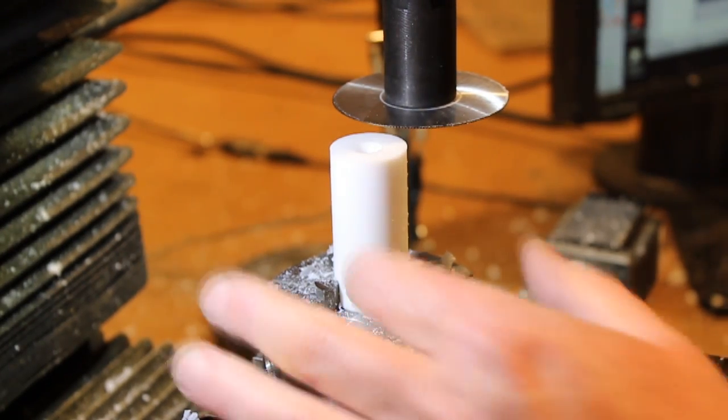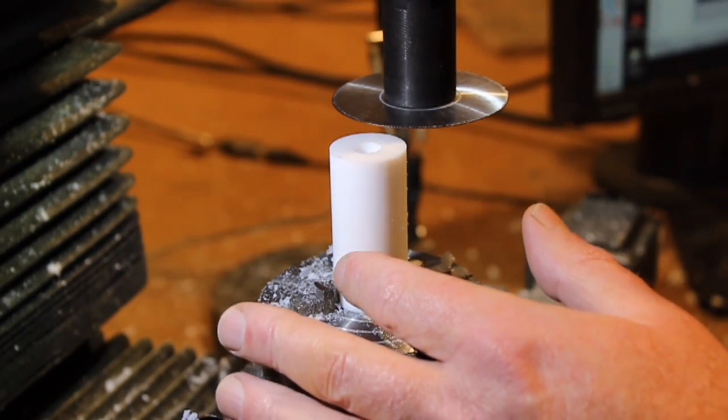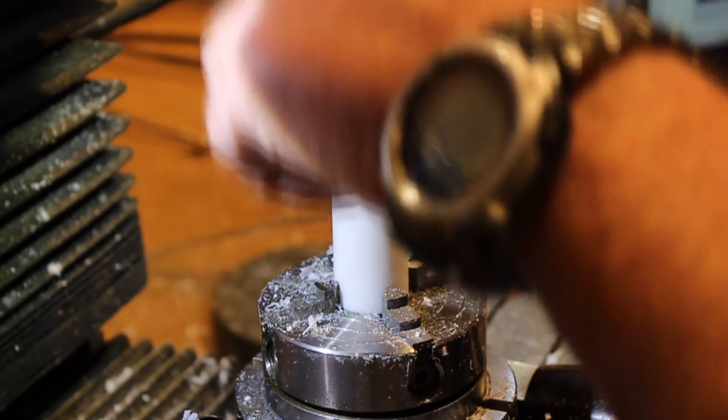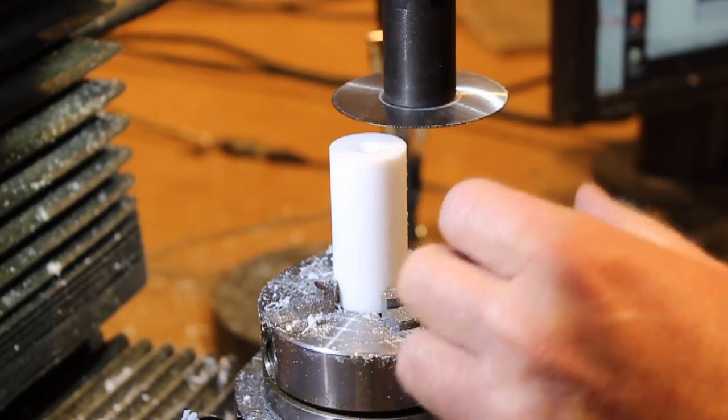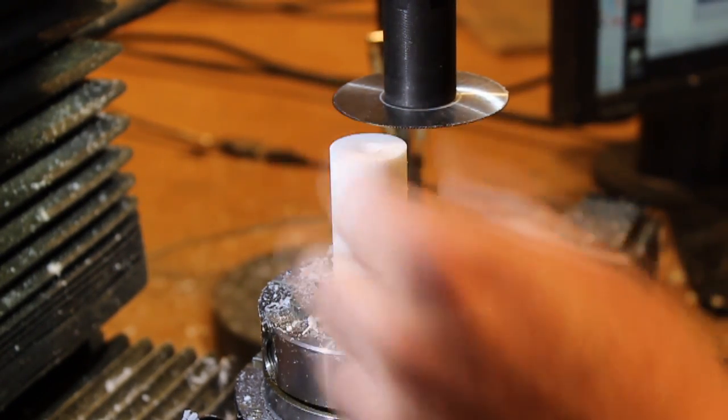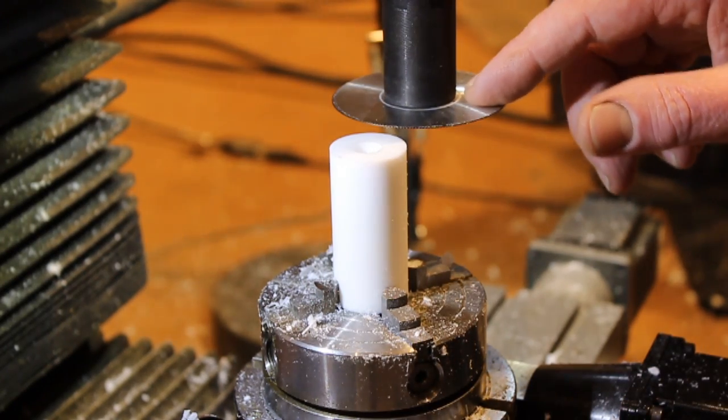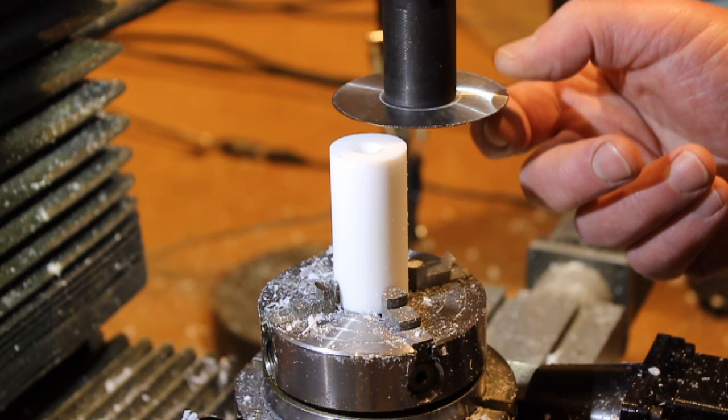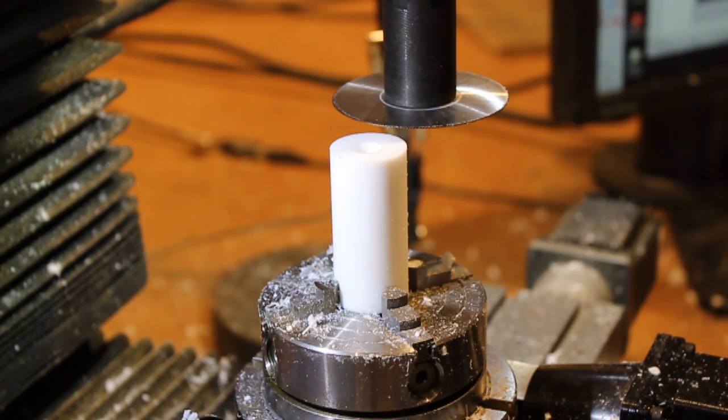What I've done is I've taken this rod of Teflon, I've drilled and reamed a hole down the center, which is the right size for the main shaft, and I've loaded my slitting saw in here. This is a .016 thickness slitting saw.